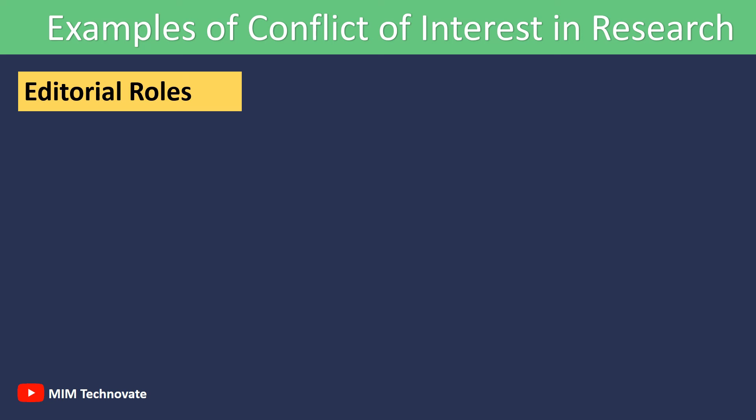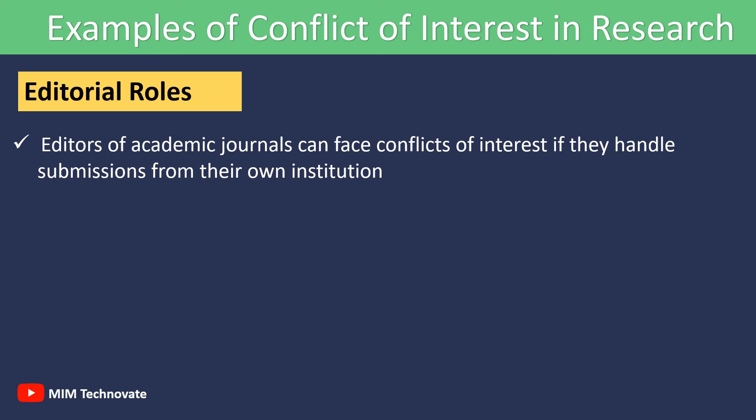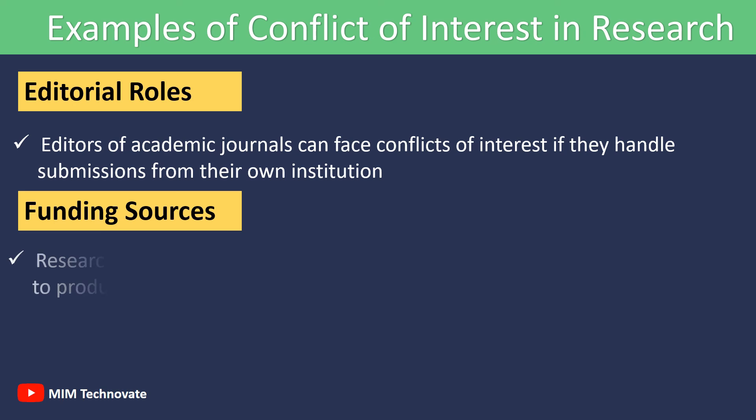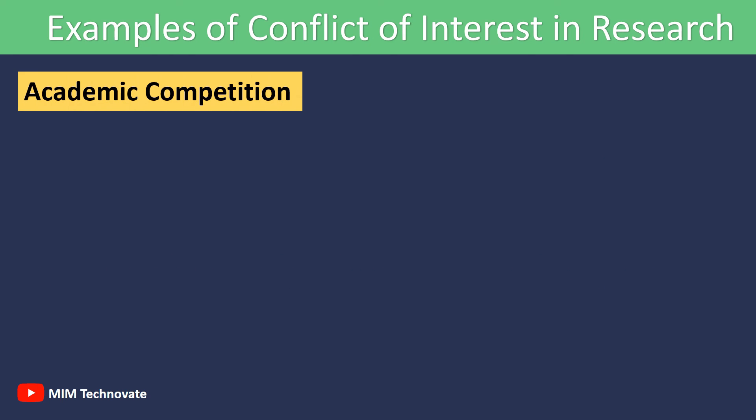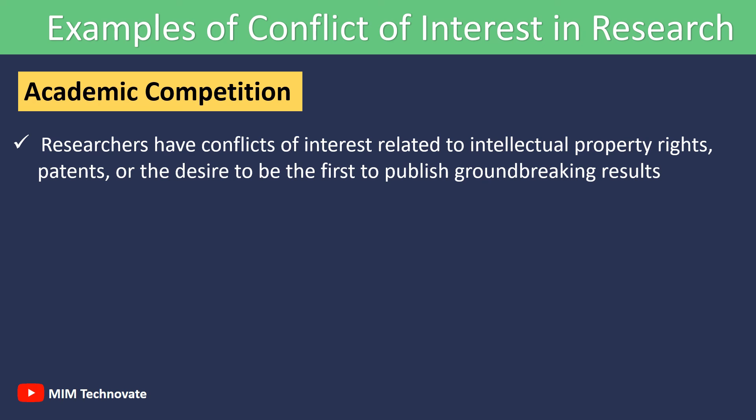Editorial Roles: Editors of academic journals can face conflicts of interest if they handle submissions from their own institutions or if they have personal connections to the authors. Funding Sources: Researchers who rely on funding from a particular source may feel pressured to produce results that align with the interests or agenda of the funder. Academic Competition: In highly competitive academic environments, researchers may have conflicts of interest related to intellectual property rights, patents, or the desire to be the first to publish groundbreaking results.